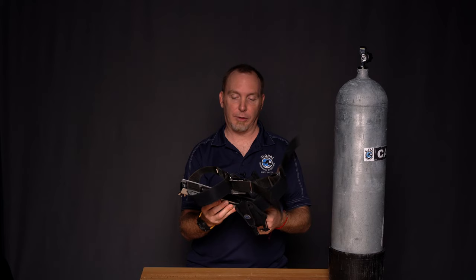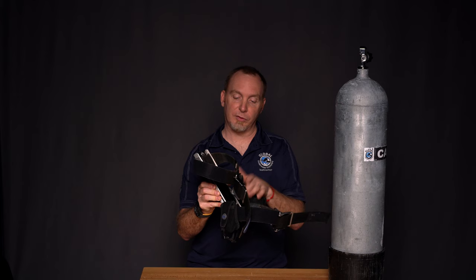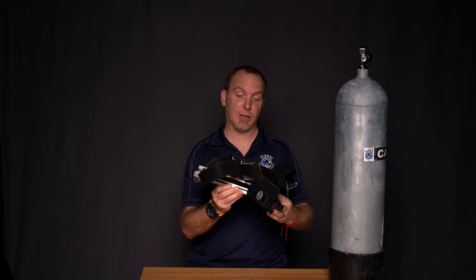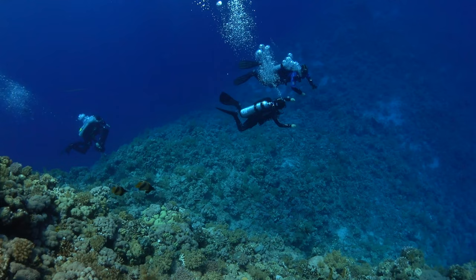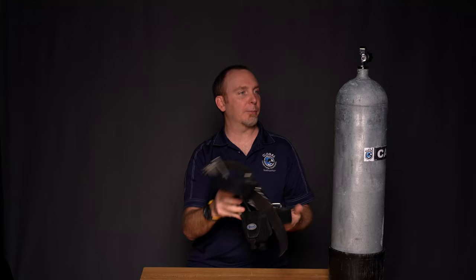So this is my Halcyon STA. It has a six-pound weight that I can remove that's built into it, and that's nice because it puts the weight itself near my center of mass and makes it easier for me to trim out and swim around really comfortably.